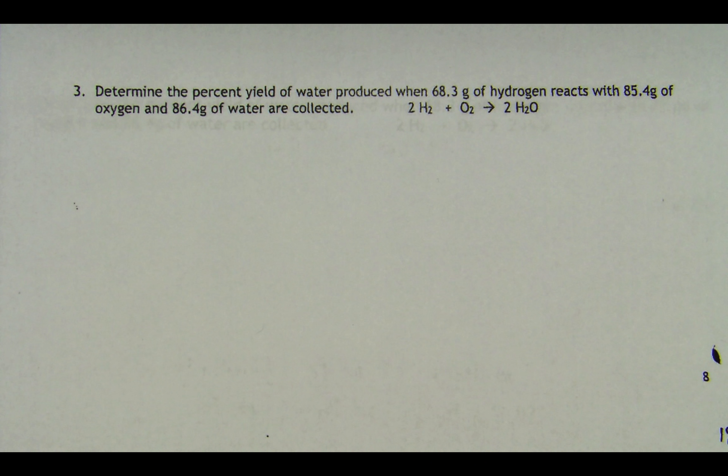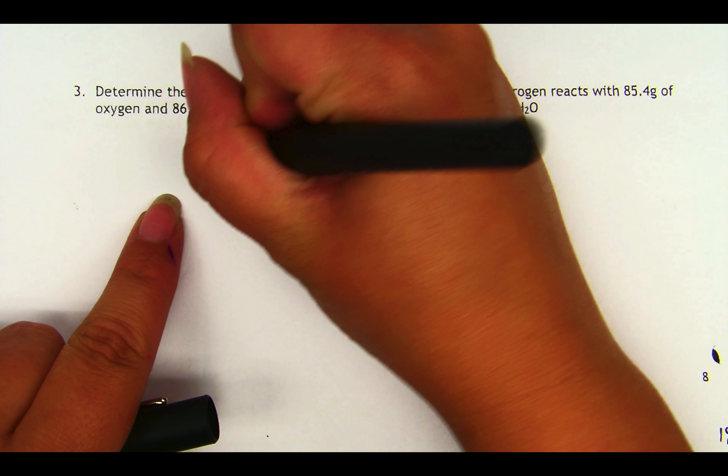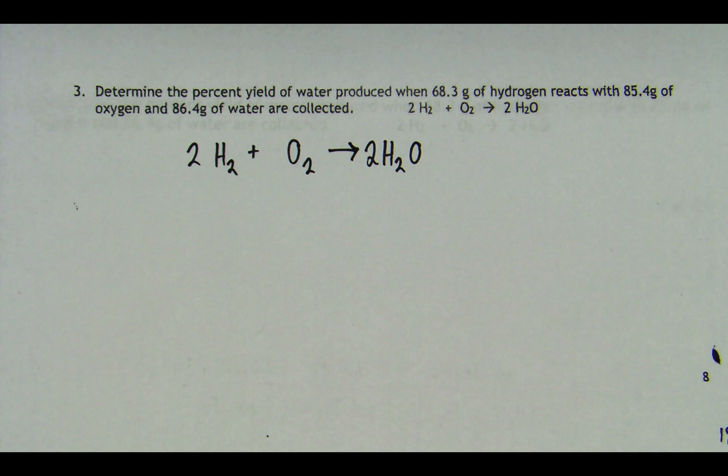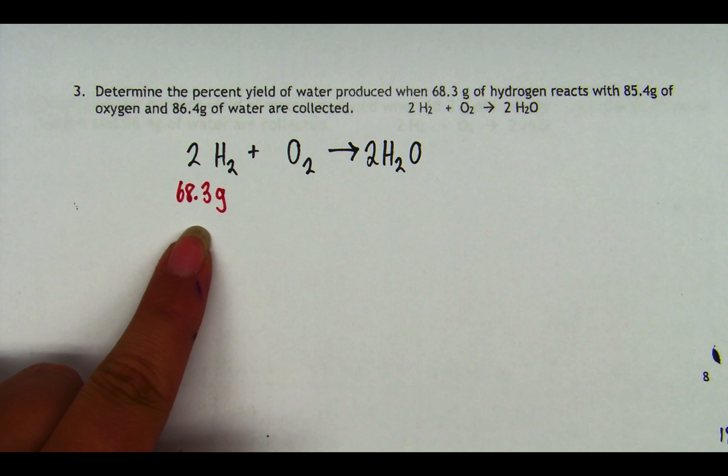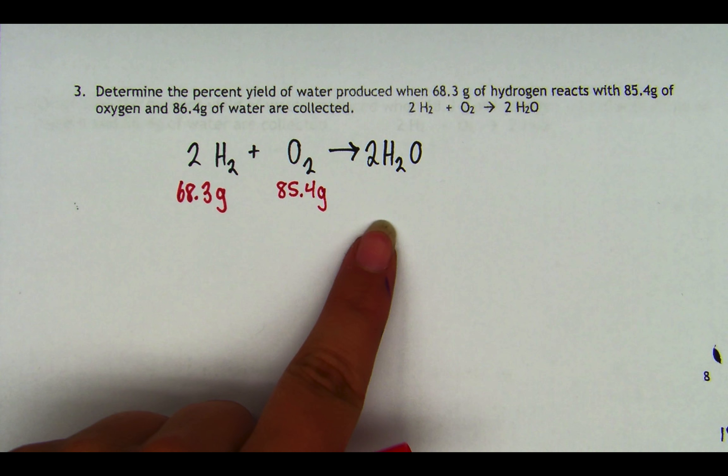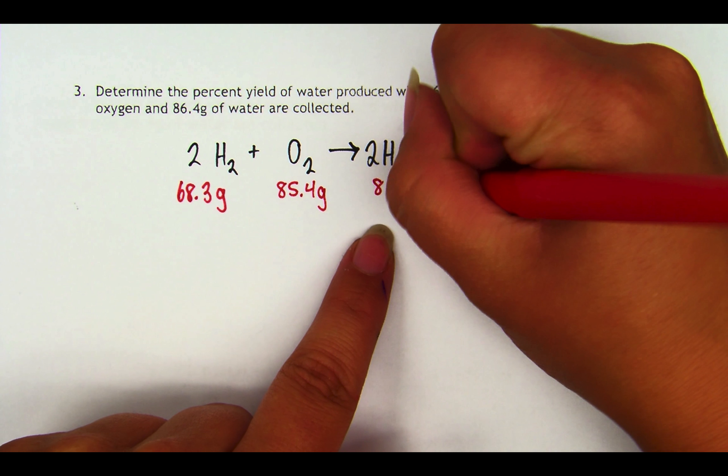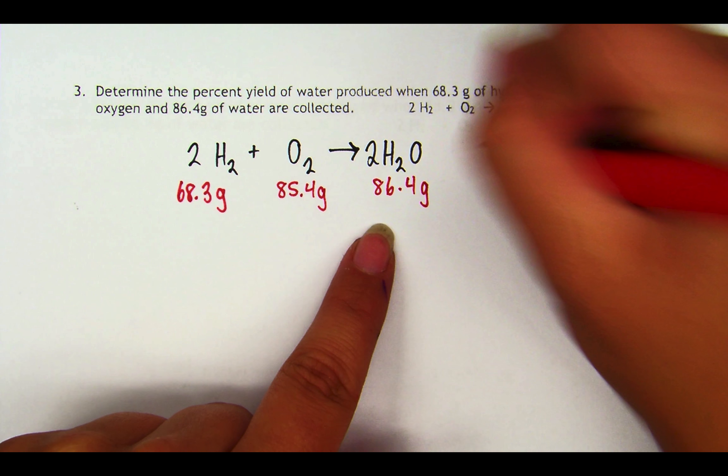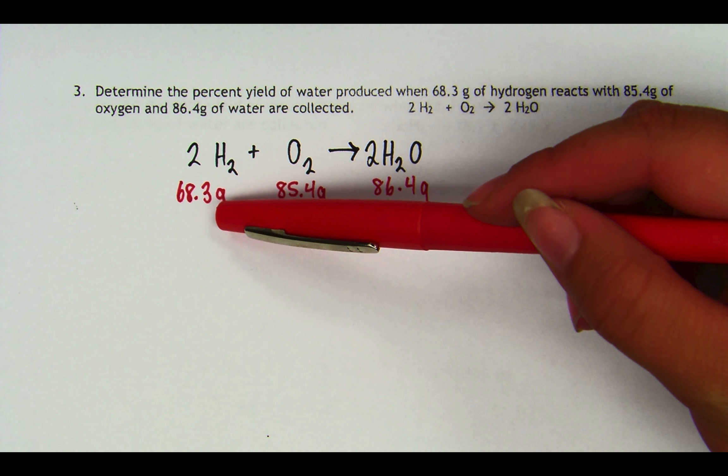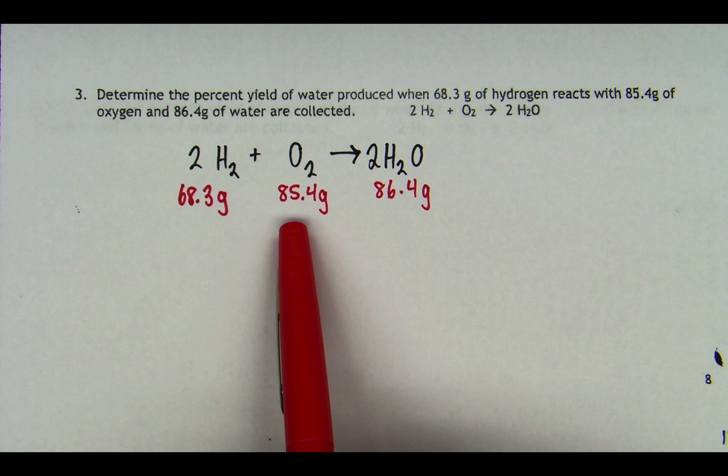I'm going to start by writing that reaction bigger so we can write some information by it. So let's write what we know. We know we have 68.3 grams of hydrogen reacting with 85.4 grams of oxygen. And when we do that reaction, we're collecting 86.4 grams of water. Now just looking at this very quickly, I know that hydrogen is pretty light, so this is a lot of hydrogen. The molar mass of hydrogen is just 2.02, so that is a whole lot of hydrogen. Well, not quite as much as oxygen. Even though I only need half as much oxygen, I'm still thinking that the oxygen is going to be my limiting reactant. But we're going to actually do out the math to figure it all out first.